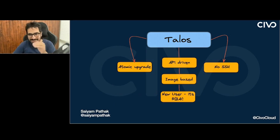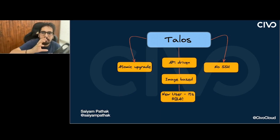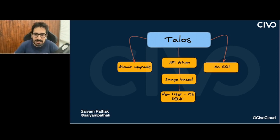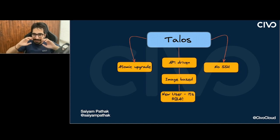That is where Talos comes in. Talos is the modern operating system for Kubernetes — meant for Kubernetes, built for Kubernetes. Talos is super tightly coupled to Kubernetes. It is completely API-driven. If you understand the power of APIs, you can map the same power to Talos — you can do everything in Talos only via the API. The best part: there is no SSH. Why log into a system, make changes, and have another person figure out what was changed?